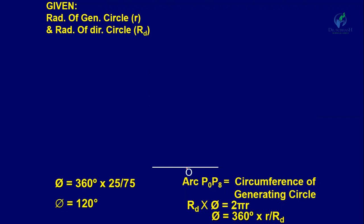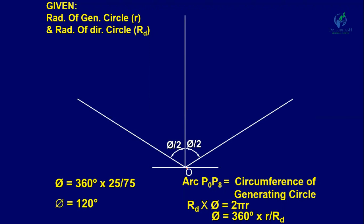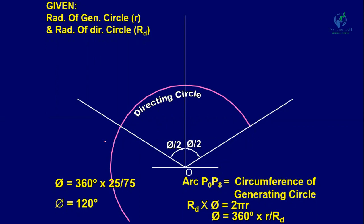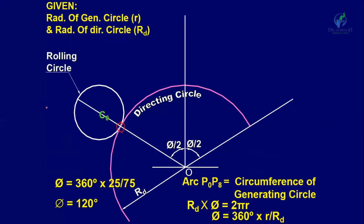From point O, draw a vertical line, then draw two lines at 60 degrees on each side. With O as center and radius 75 mm, draw the directing circle arc. Mark center C0 at 25 mm outside the directing circle and draw the rolling circle of radius 25 mm. Divide the rolling circle into 8 equal divisions labeled 0 through 8. You can also use 12 divisions.